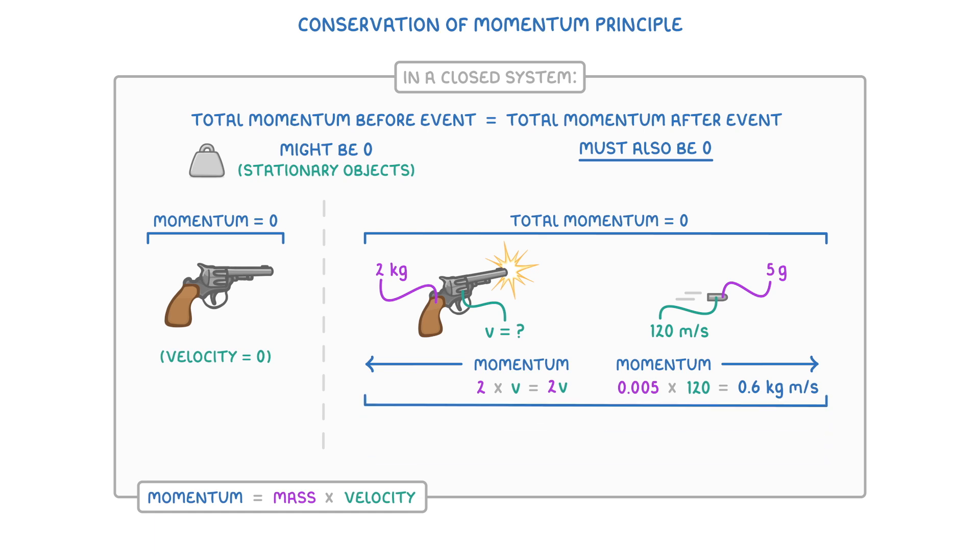Finally, we can use these momentum values for the gun and the bullet to rewrite our equation as 2V plus 0.6 equals zero.